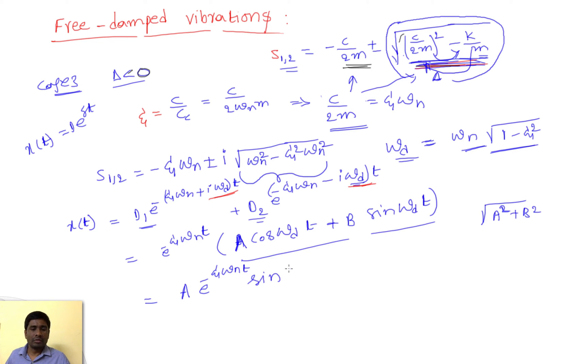This is the final equation for damped vibrations. If you observe, we have a sine term, but in both previous cases we don't have a sine term—we have only exponential terms. But here we have a sine term, which means this motion is harmonic.